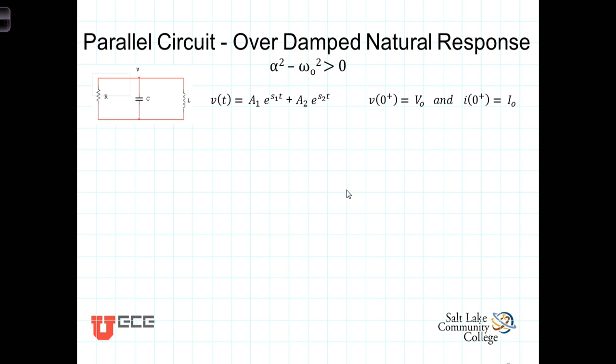We're going to first consider the situation where the parallel circuit is overdamped. By overdamped, that means that α² - ω₀² > 0, where α was defined as 1/(2RC), and ω₀, the natural frequency of the circuit, equals 1/√(LC).